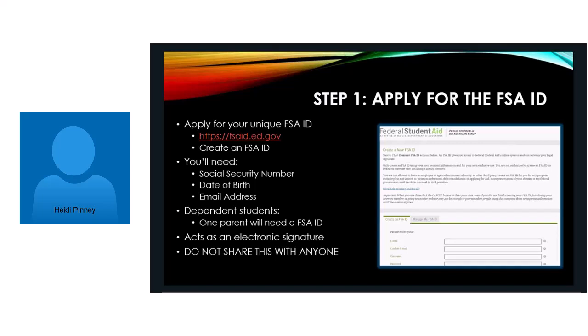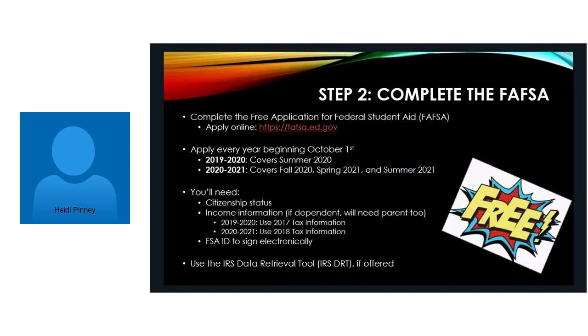Step two is completing the FAFSA form. The FAFSA form stands for the Free Application for Federal Student Aid, and you can apply online at FAFSA.ed.gov. What that will do is bring you into a big consolidated site at studentaid.gov. You will need to apply every single year beginning October 1st when it opens up.